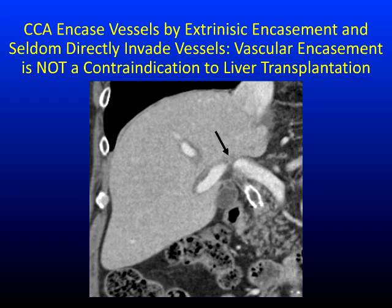Cholangiocarcinomas encase vessels by extrinsic encasement — they seldom invade. Unlike HCC, which usually has tumor thrombus in the vessel when you see loss of flow, this is unusual in cholangiocarcinoma. Usually what they do is encase the vessel by periductal encasement and inflammatory reaction. So encasement does not indicate tumor invasion, and encasement is not a contraindication to liver transplantation. Of course, vascular invasion with HCC is a contraindication, but this is not the biology of cholangiocarcinomas.